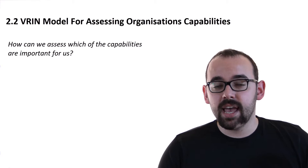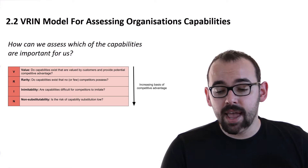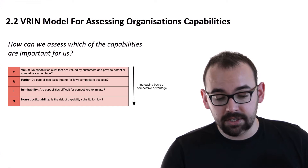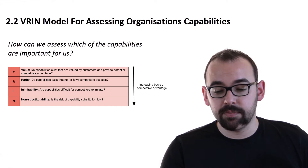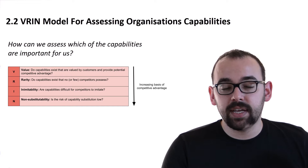We are going to look at each of these and ask whether they are important to us. The VRIN model stands for Value, Rarity, Inimitability, and Non-substitutability. Under Value we will ask: do capabilities exist that are valued by customers and provide potential competitive advantage? Rarity: do capabilities exist that no or few competitors possess? Inimitability: are capabilities difficult for competitors to imitate? And finally, Non-substitutability: is the risk of capability substitution low?